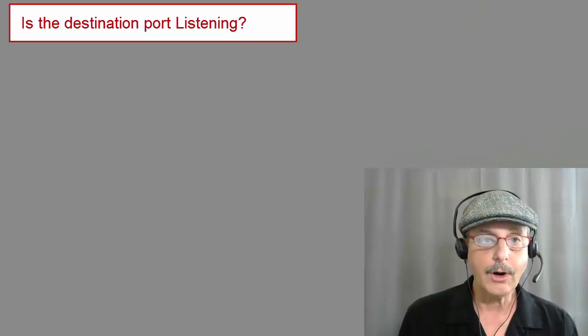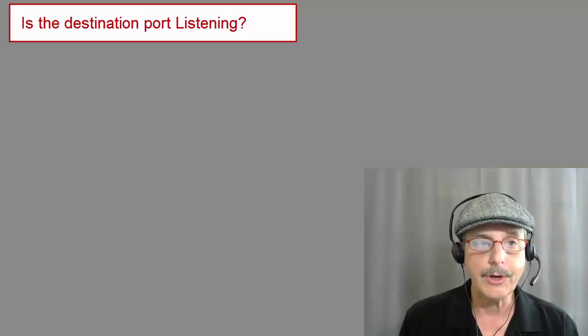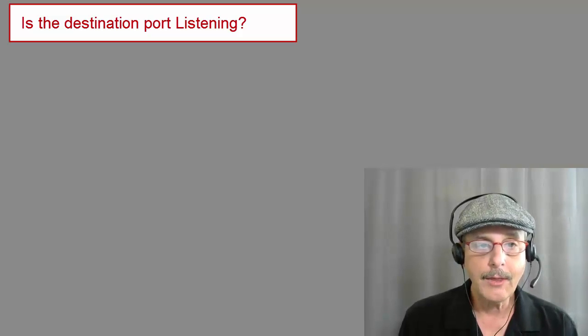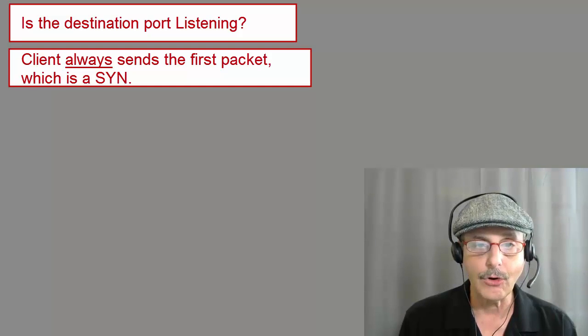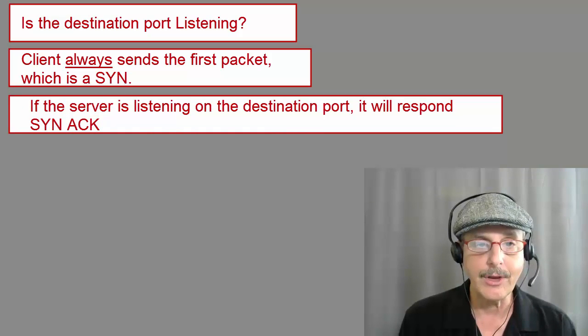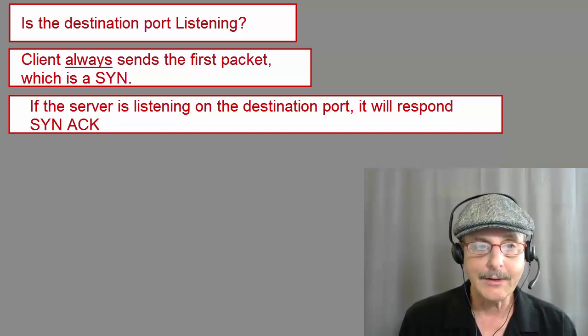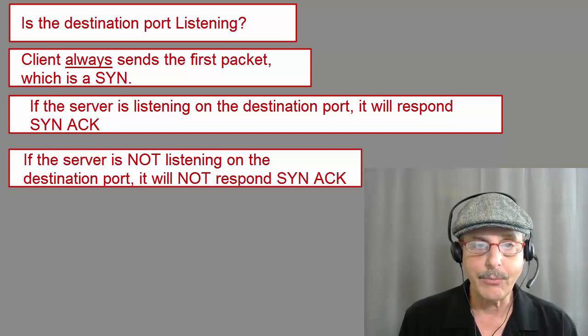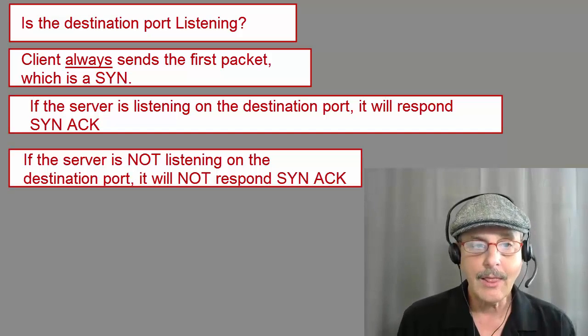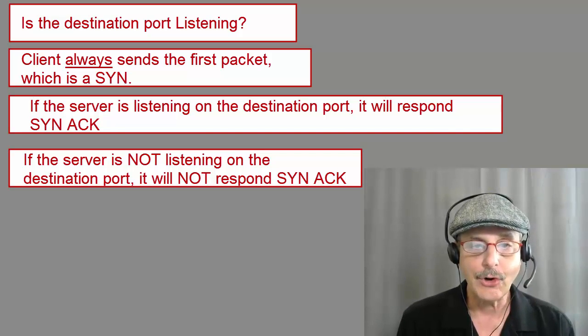Let's start with the first function of the three-way handshake, which is: is the destination port listening? In TCP, we have a client host that tries to connect to a server host. The client always sends the first packet, which is always the SYN. If the server is listening on the destination port of the SYN packet, then it will respond with a SYN-ACK. If it is not listening — that is, the server port is closed — then it will not respond with SYN-ACK, and the connection process terminates there.